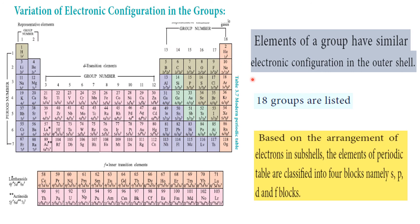Based on the arrangement of electrons in the subshell, the elements of the periodic table are classified into 4 blocks: s-block, p-block, d-block, and f-block.